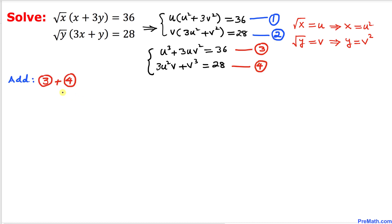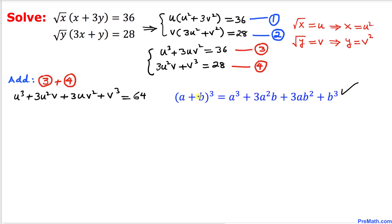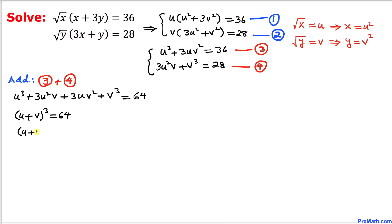Now in the next step we are going to add equation 3 plus equation 4. If we add them we get u cubed plus 3u squared v plus 3uv squared plus v cubed equal to 64 on the right-hand side. Using the formula for a plus b cubed, the left-hand side becomes u plus v, all cubed, equals 64.